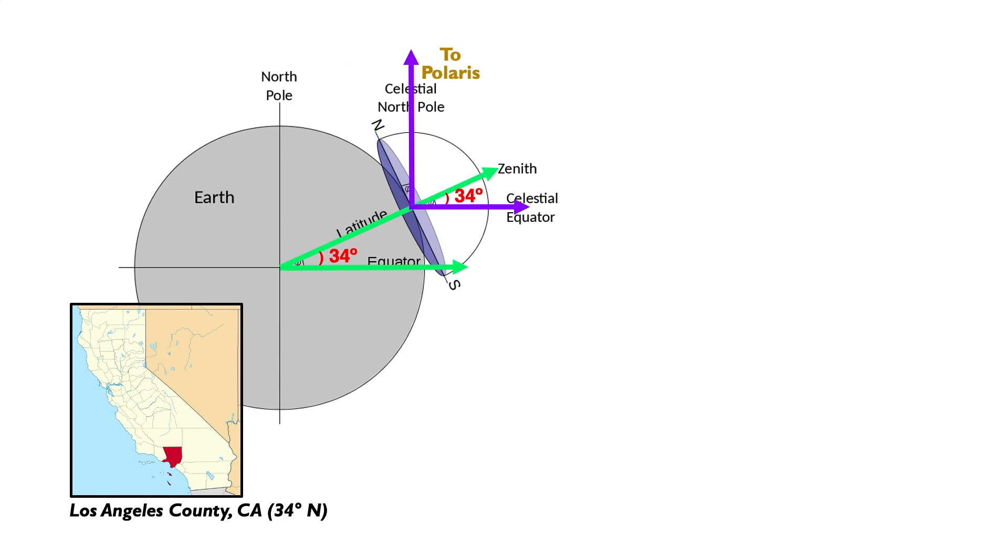This means that the angle between Polaris and your zenith is 90 minus 34 or 56 degrees. But looking again at this 90 degree angle we can see that if the part between Polaris and your zenith is 56 degrees